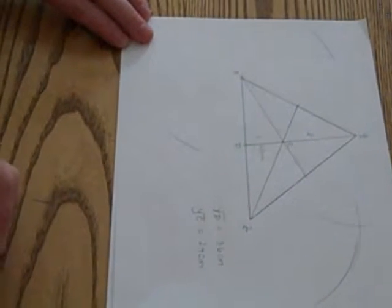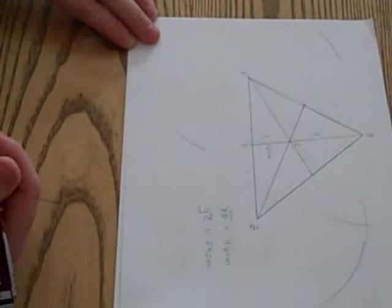So remember, the point of concurrency of the three medians is the centroid.